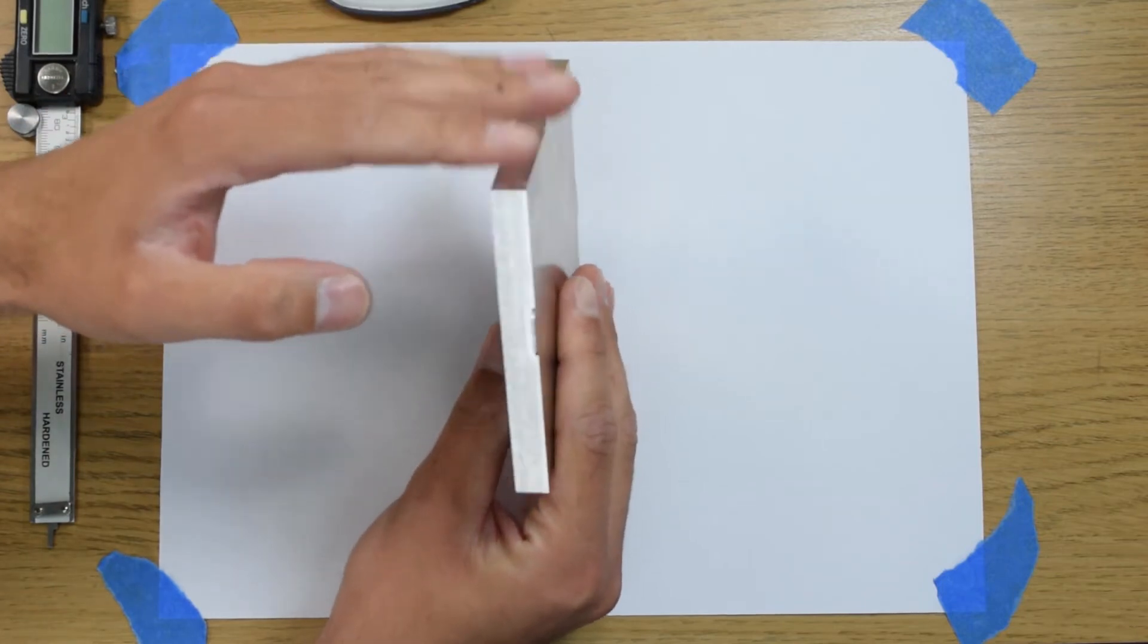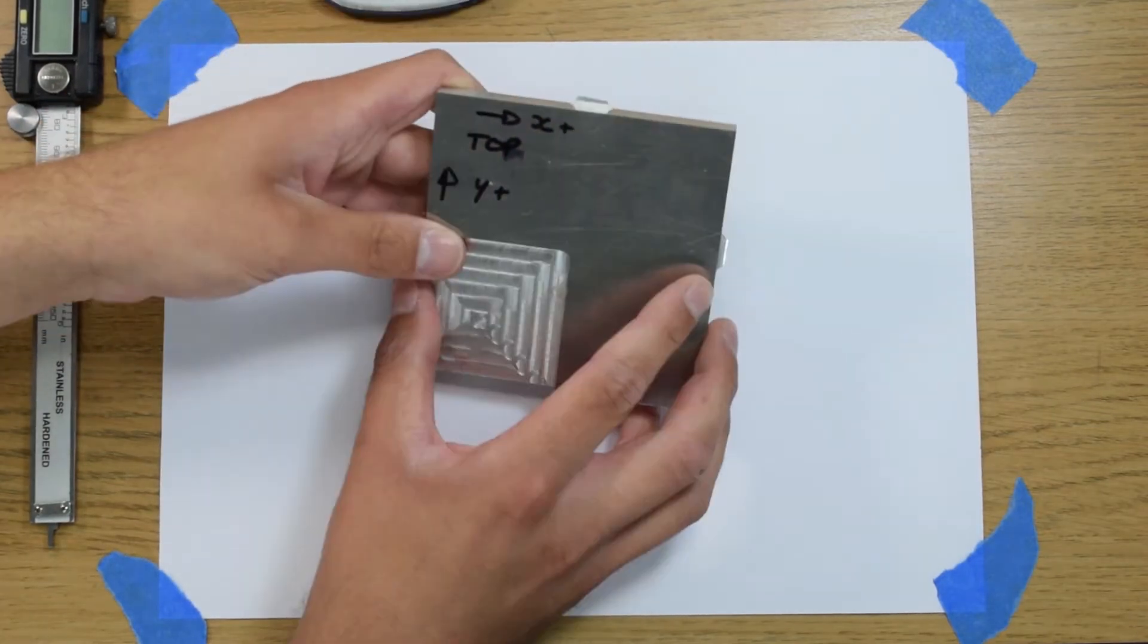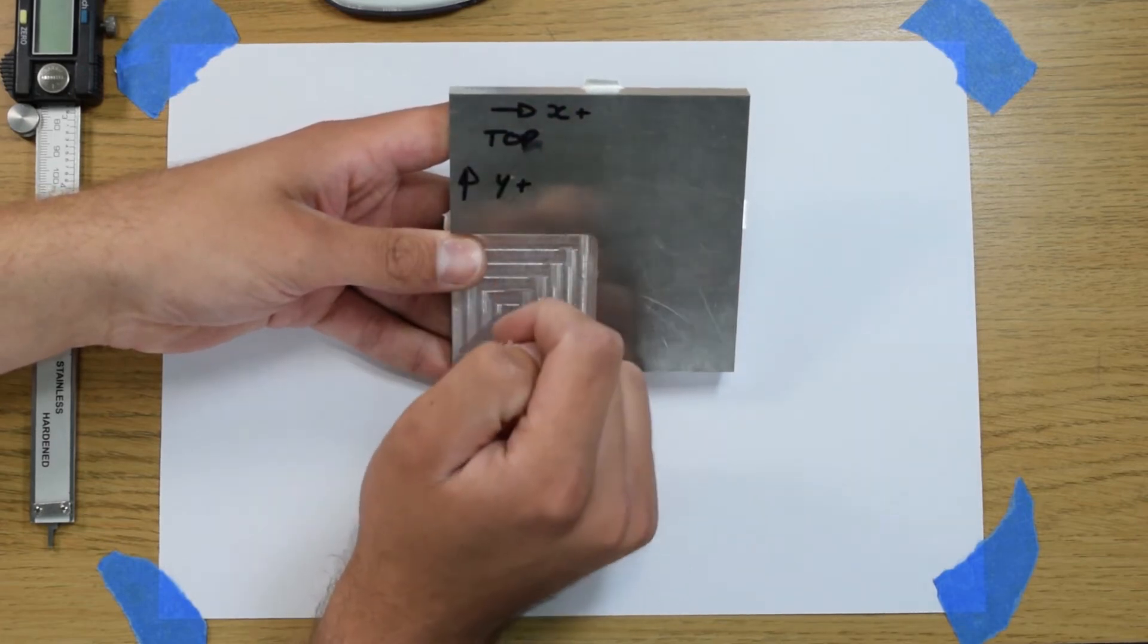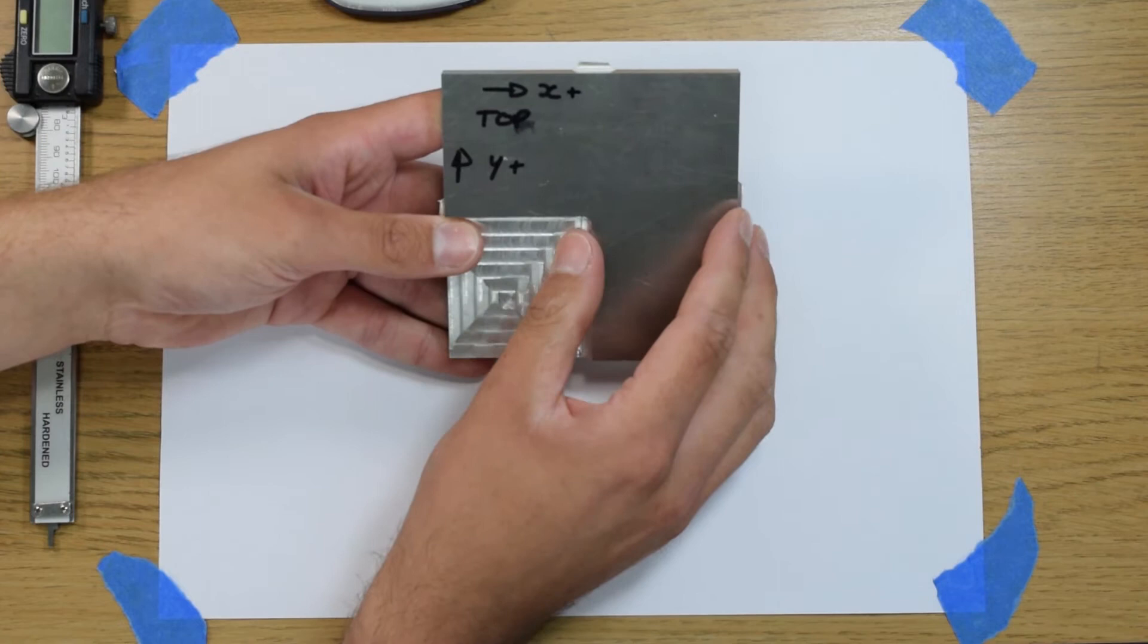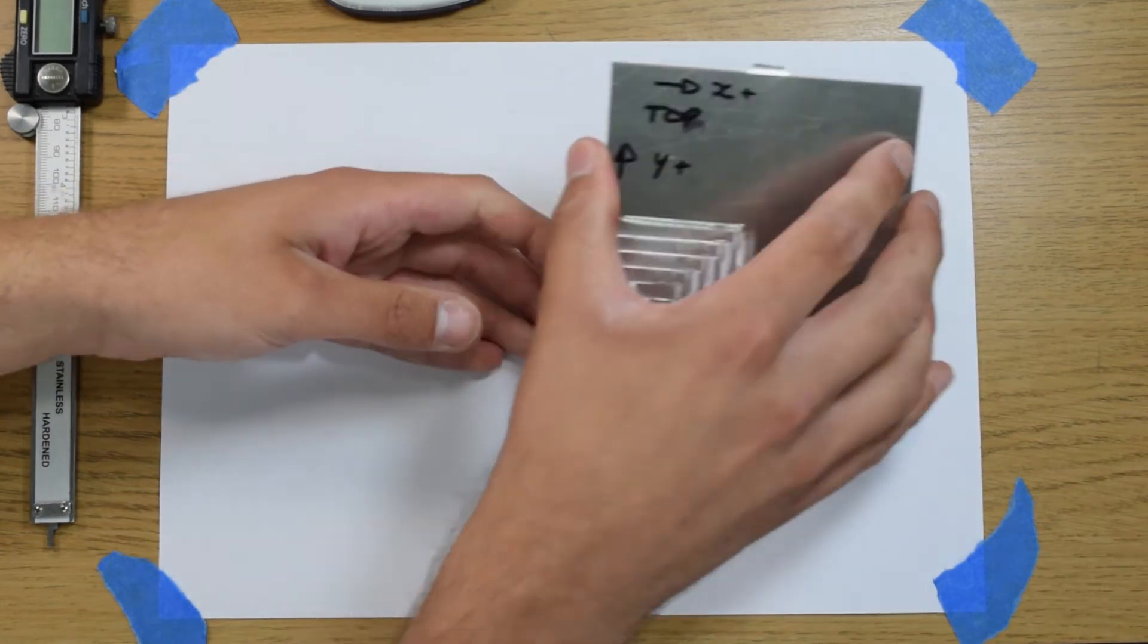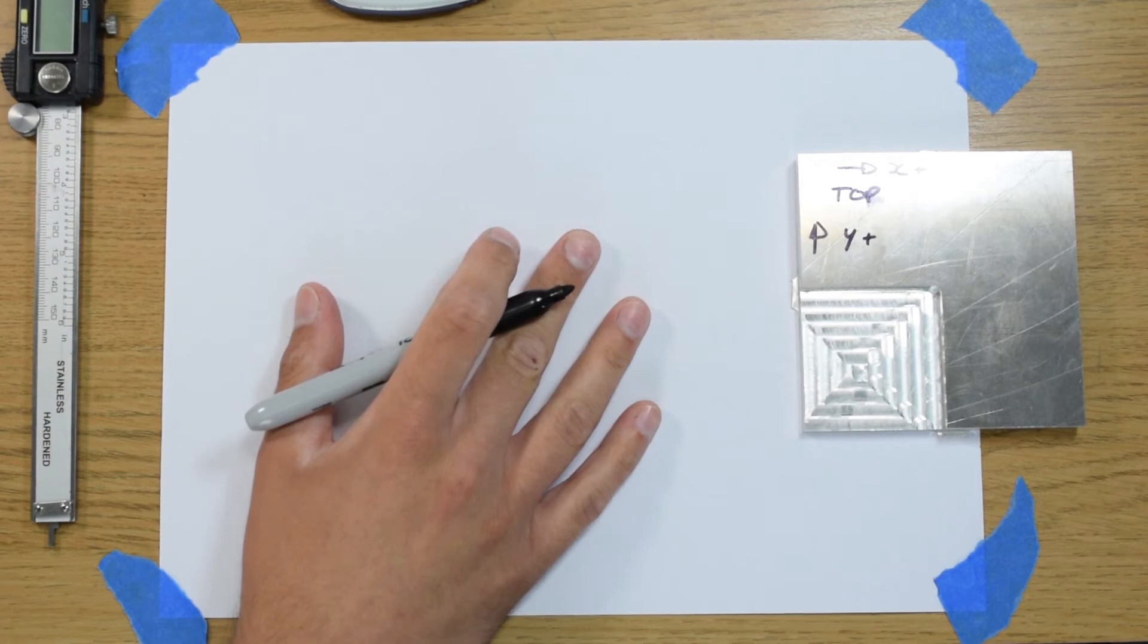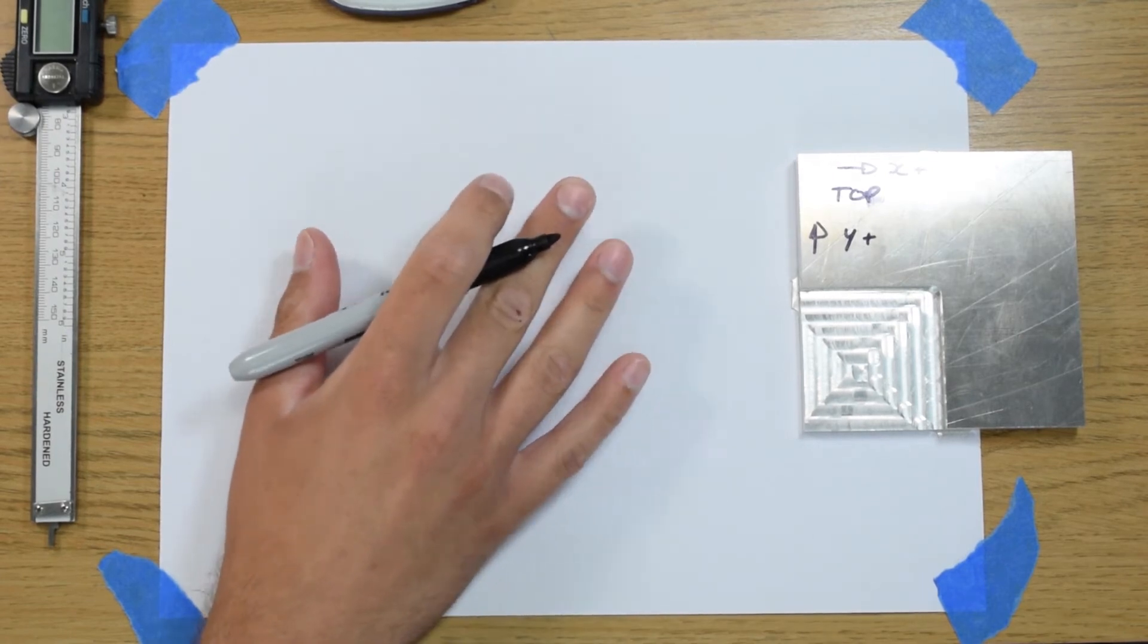Another thing to note is that I've also marked the X plus dimensions and the Y plus dimensions. So if you ever want to come back and measure this piece, I know what way it's orientated.